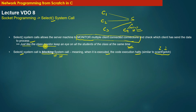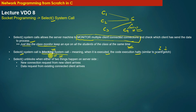Such calls are called blocking system calls, and the select system call is one such blocking system call. The select system call unblocks when either of two things happen on the server side. The first scenario is when the server receives a new connection request from a new client — that is, when new client C4 sends a new connection initiation request to the server S, the server S unblocks from the select system call.